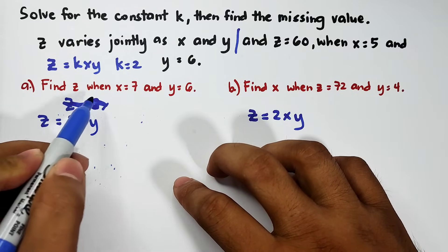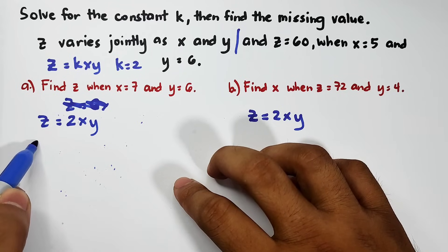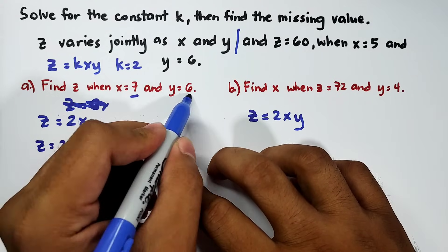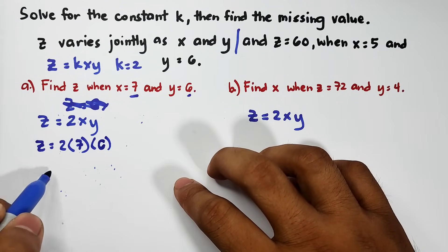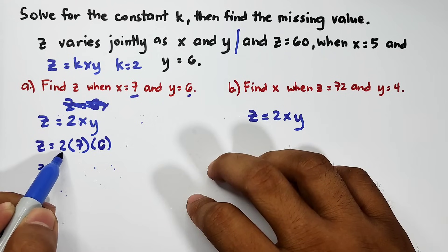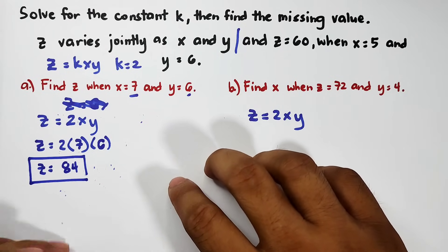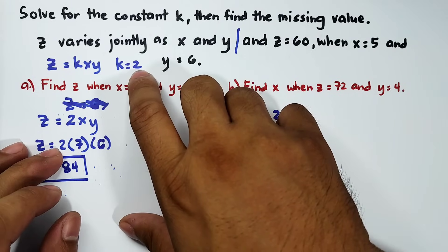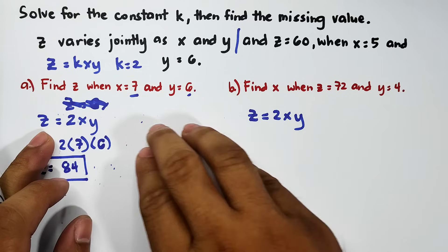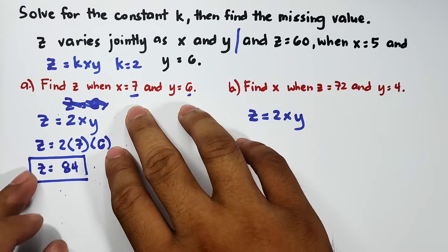Let's try letter A: find z when x is equal to 7 and y is equal to 6. Z is equal to 2 times 7 times 6. Simplify: 7 times 6 is 42, times 2 that is 84. This is the value of z. For letter B, what's missing is x. Plug in z is equal to 72: 72 is equal to 2 times x times 4. 2 times 4 is 8, so 8x equals 72. Divide both sides by 8 — x is equal to 72 over 8, which is 9. This is the value of x.